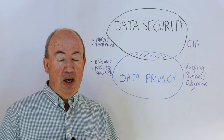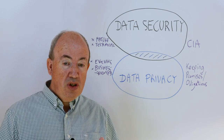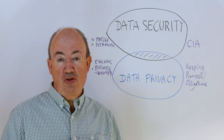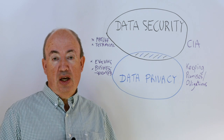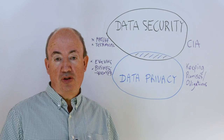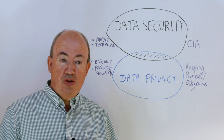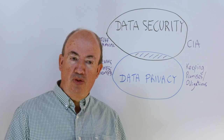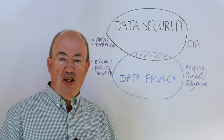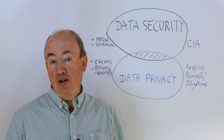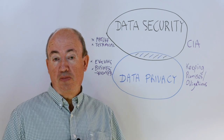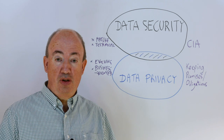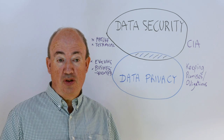That's a reasonable comparison and shows that there are genuine differences between data privacy and data security. Data security is a little bit more on the technical side, and data privacy is a little bit more oriented to the business — though that's not a hard and fast rule, as there is technology that applies to data privacy as well.